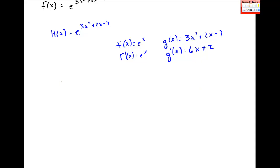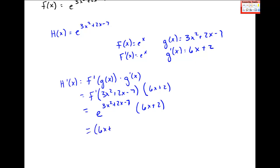So I want to go ahead, h prime of x is equal to f prime of g of x times g prime of x. So I get f prime of 3x squared plus 2x minus 7 times 6x plus 2. And f prime is e to the x. So I get e to everything in here times 6x plus 2. And I would probably move this 6x plus 2 to the front so that you can see what's happening.